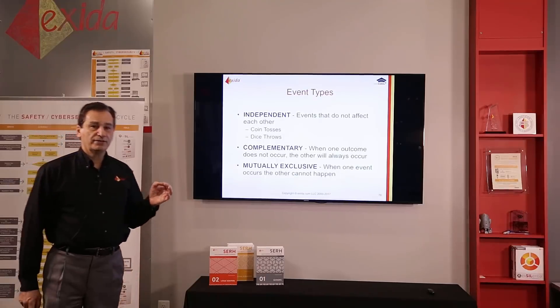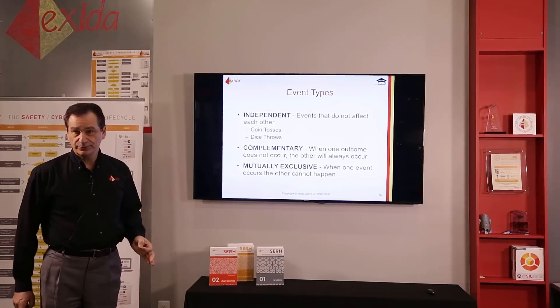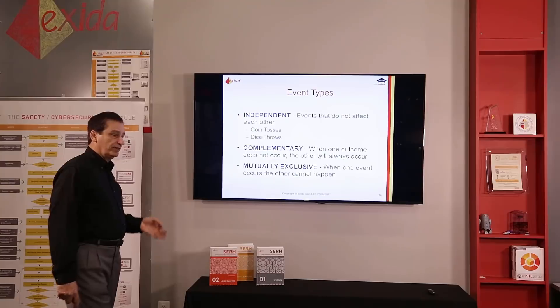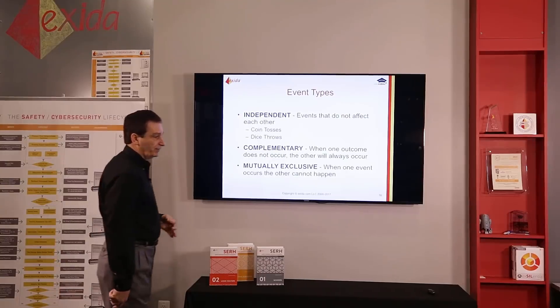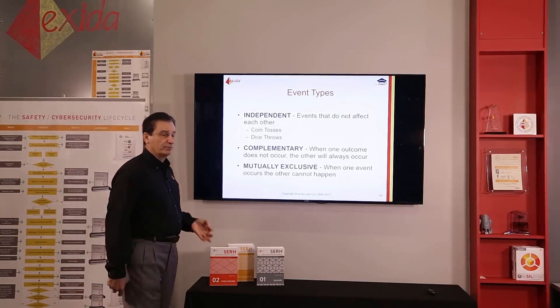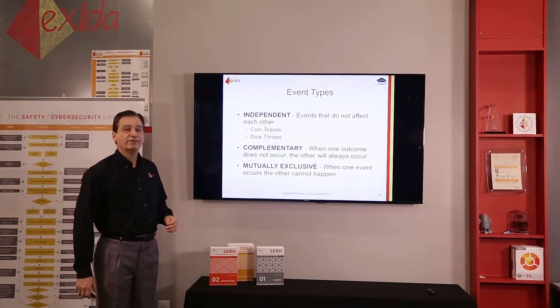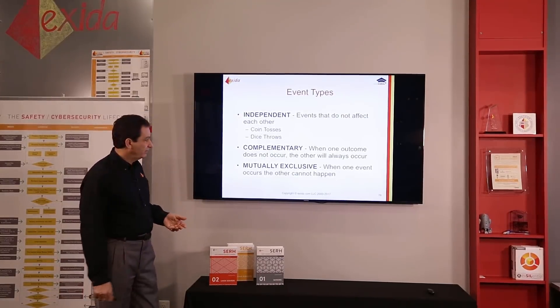Complementary events are when one outcome does not occur, the other will always occur. So we know if we have a head we're never going to get a tail. We know that if something works it hasn't failed, so we could figure out the probability of failure by subtracting the probability of success from one.